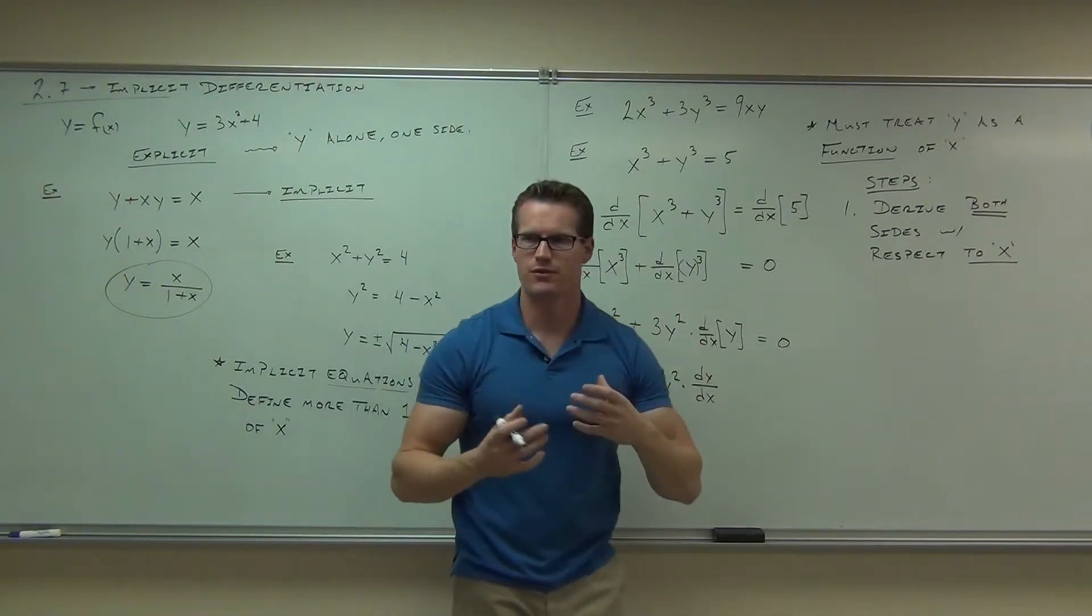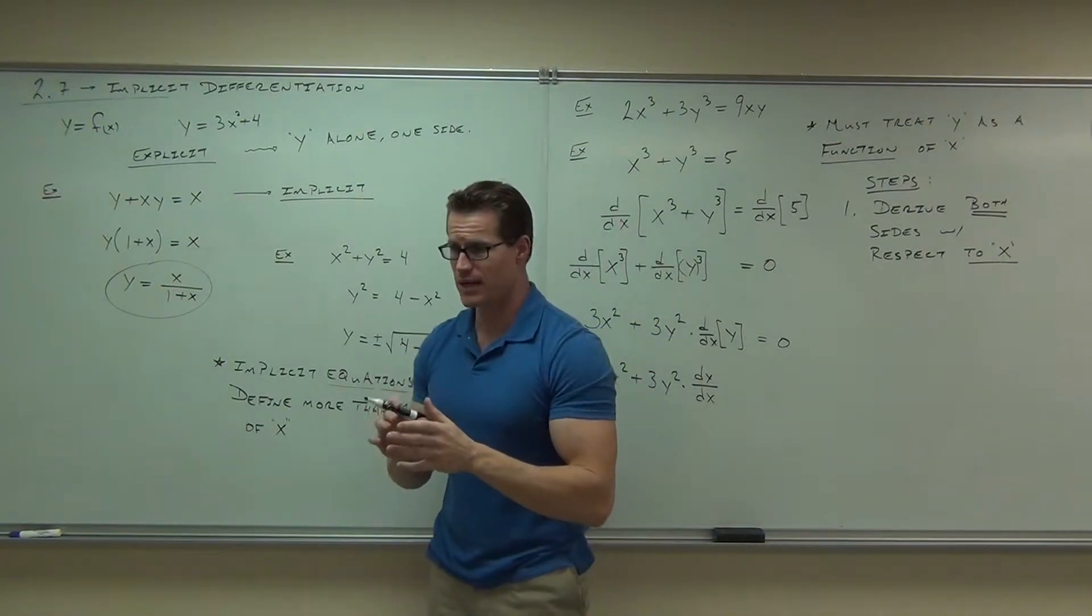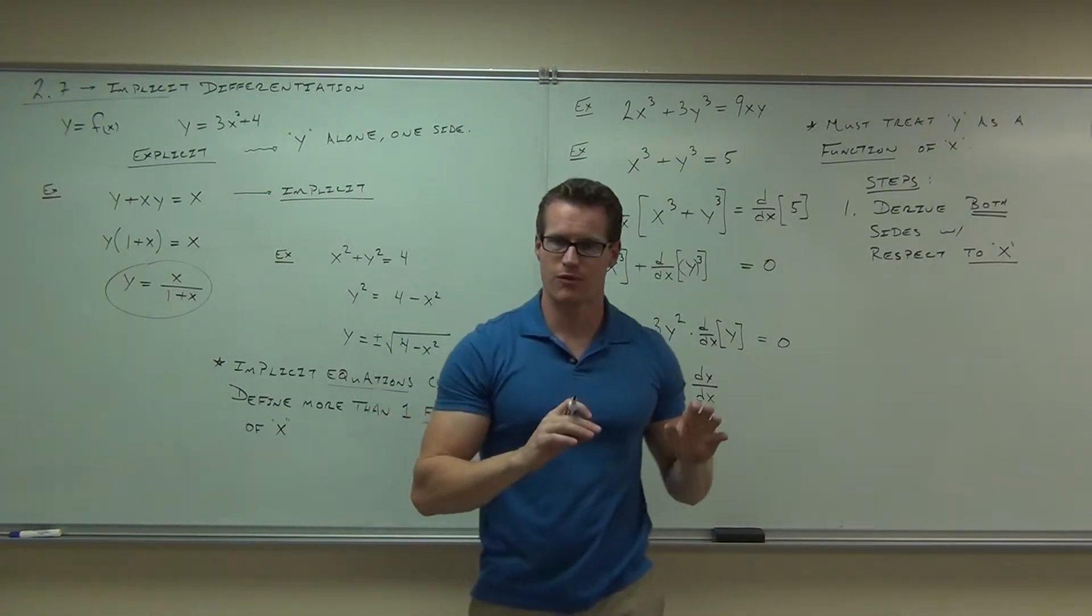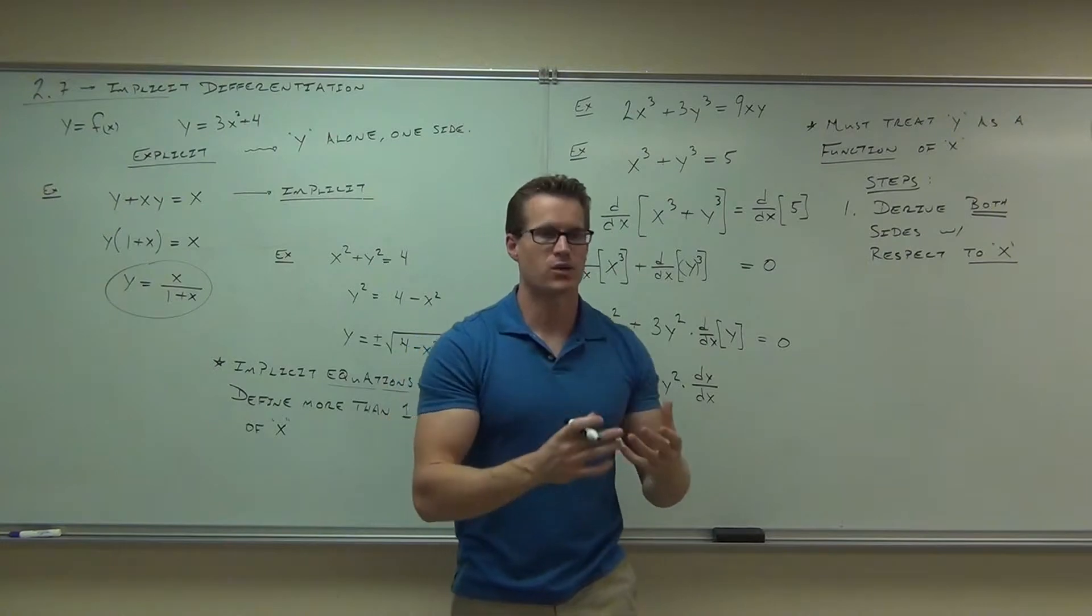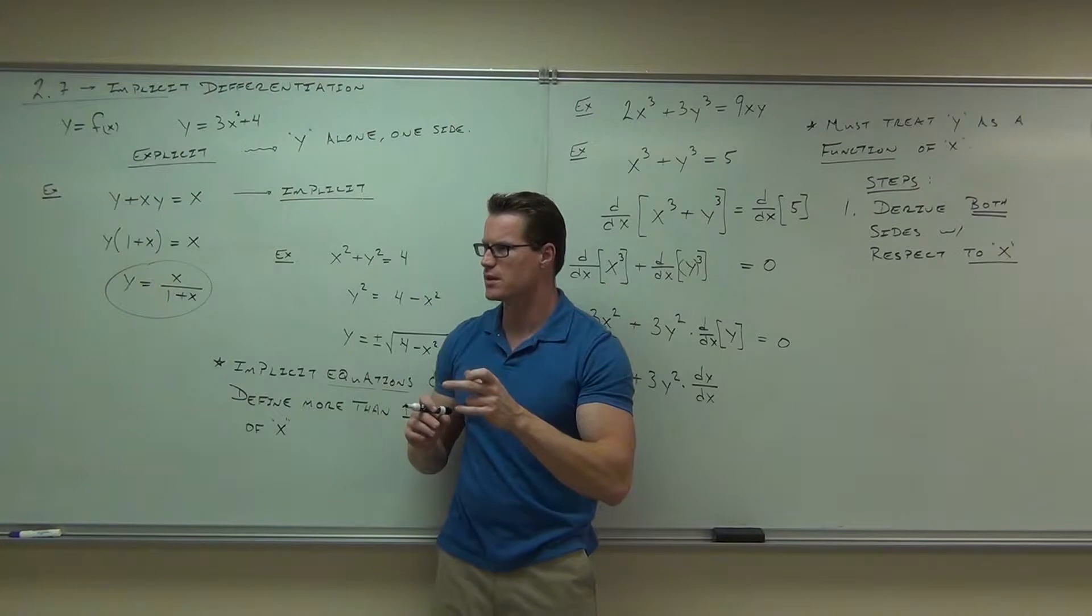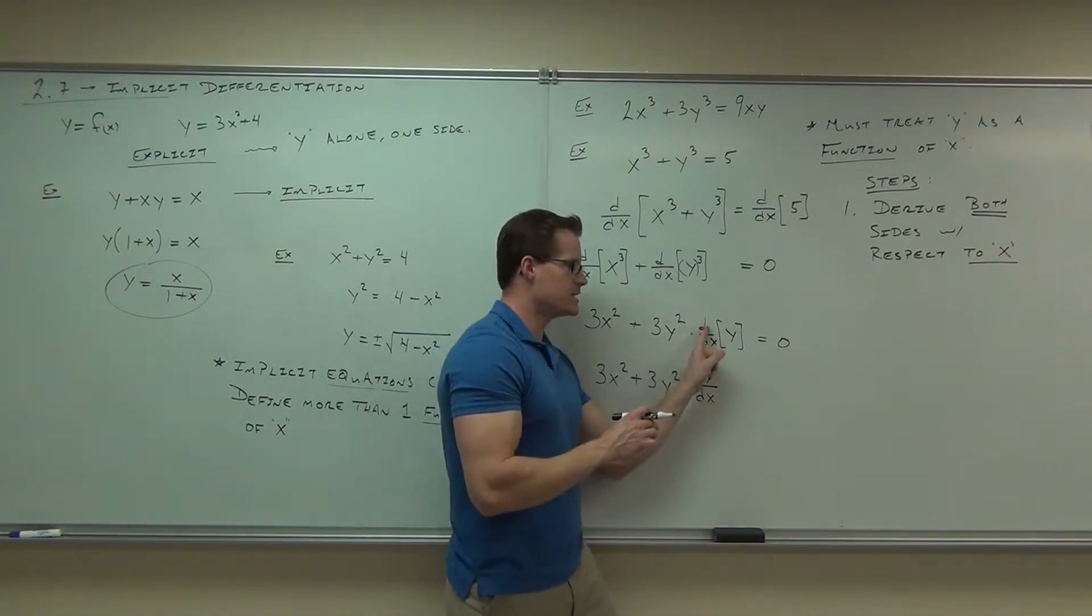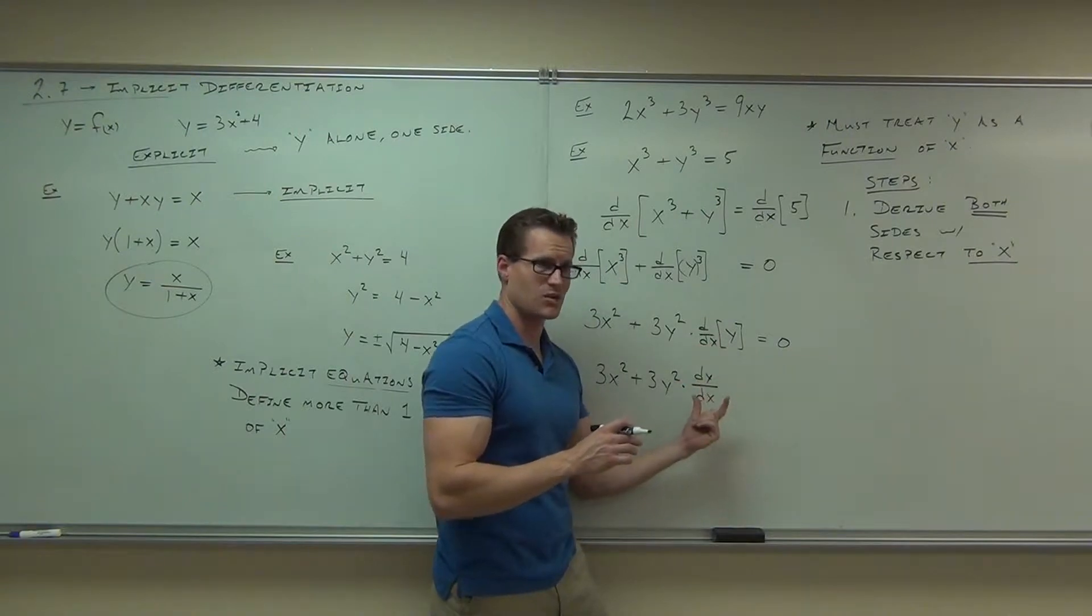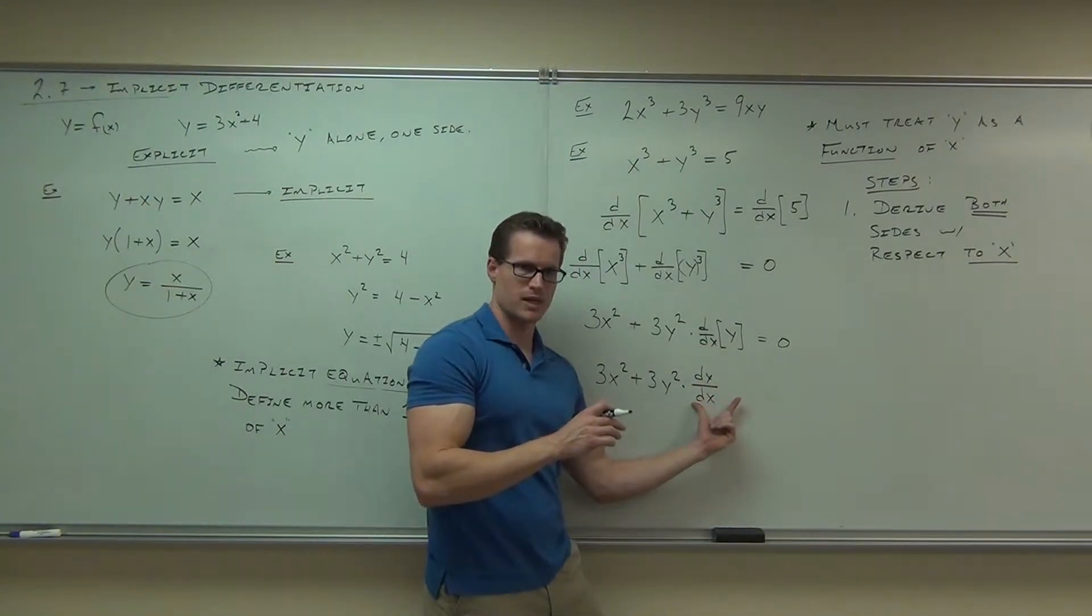Every time you take a derivative of y, you are going to get a dy dx. Because every time you take a derivative of y, you actually have a chain rule. Every time you have a chain rule, you take a derivative of the inside of it. Does that make sense to you? So every time, you're going to have a d dx of y. This is the derivative of y with respect to x, right? This is the derivative of y with respect to x.